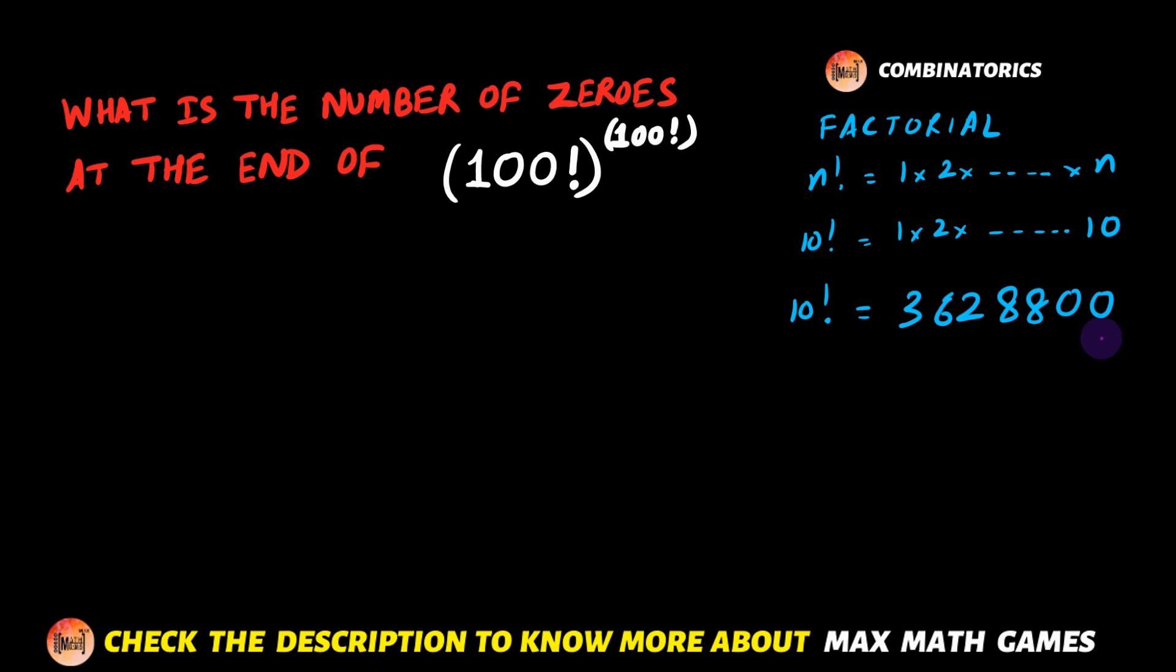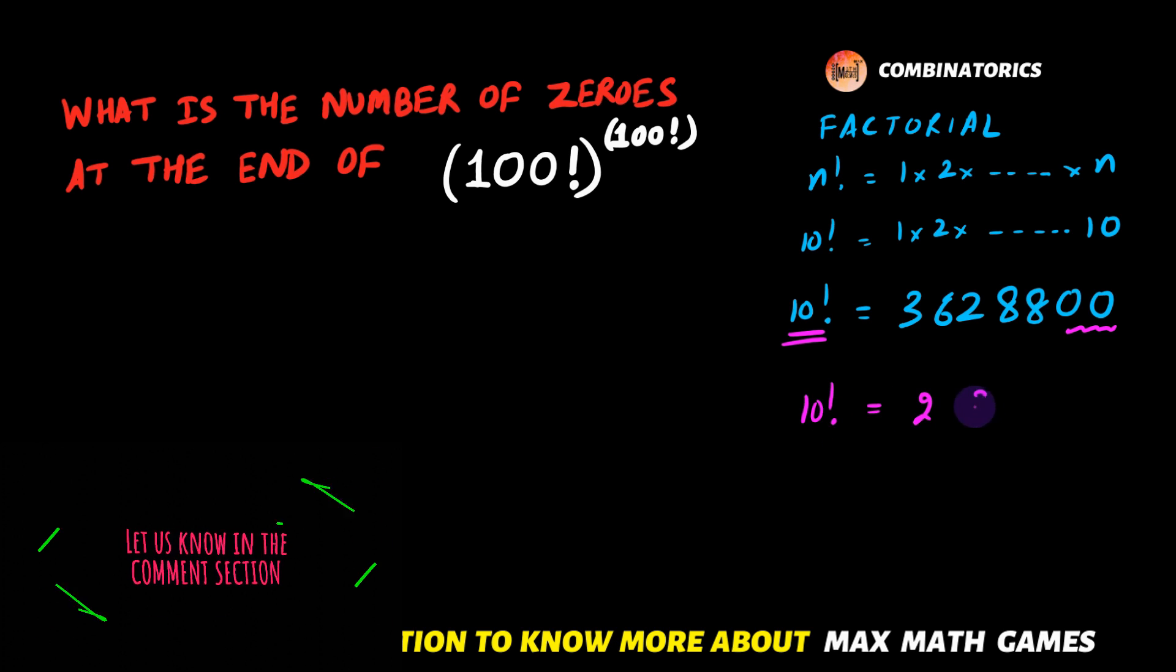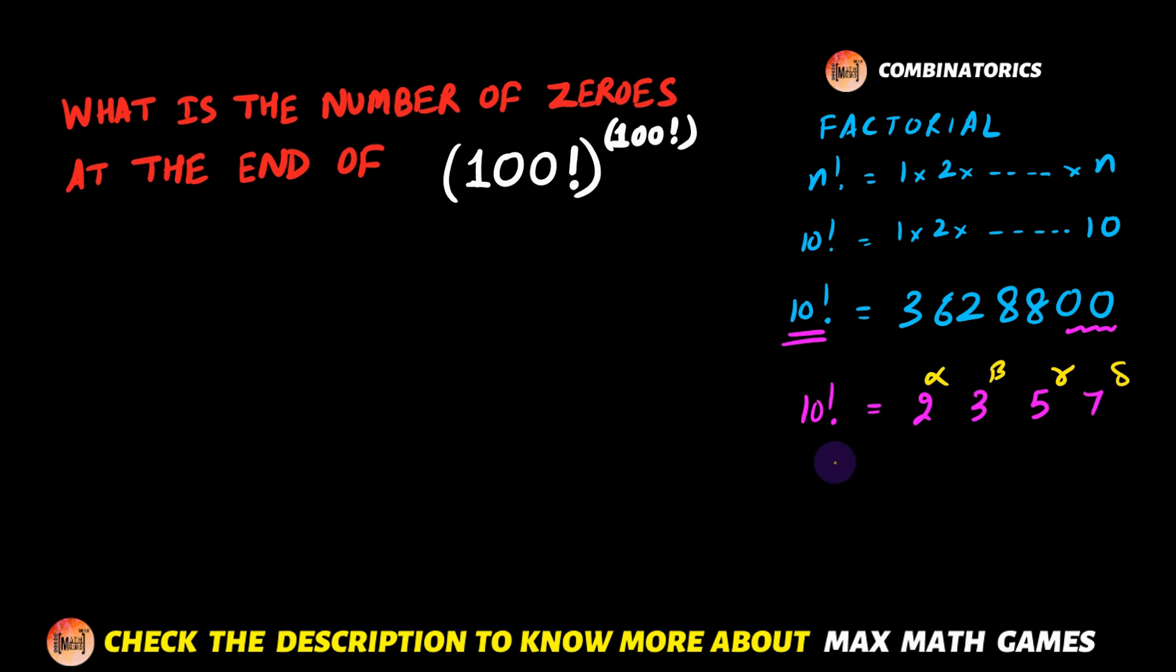Now the prime factorization of 10! contains 2, 3, 5, and 7. And 10! is a combination of some powers: 2^α × 3^β × 5^γ × 7^δ. Now what we observe is that a zero is made up of some combination of 2 and 5.